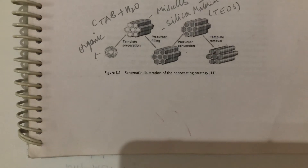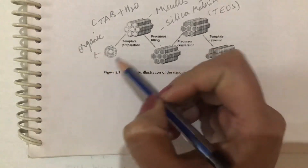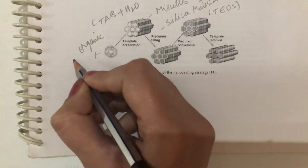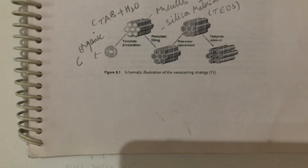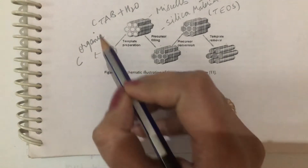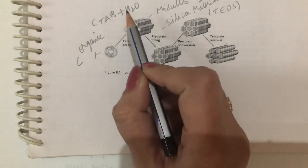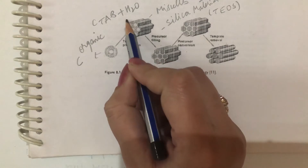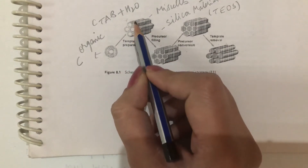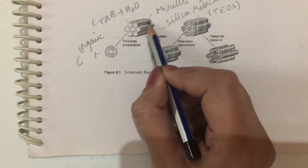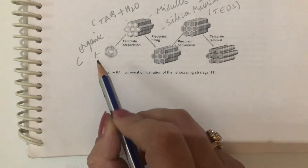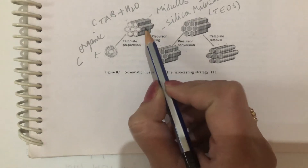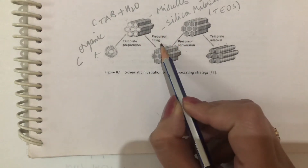This is the diagram of the nanocasting method. First of all, we take the organic template — in this case CTAB — which is basically a carbon source. When we add water to it, micelles are formed. These micelles are formed from the organic material only.